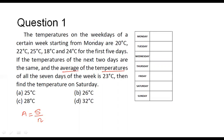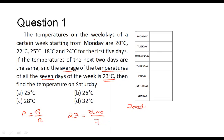It is given in the question that the average of the temperatures of all seven days of the week is 23 degrees Celsius. So: 23 = sum of temperatures / 7. From this we can conclude that the sum of temperatures across these seven days is equal to 23 × 7 = 161.